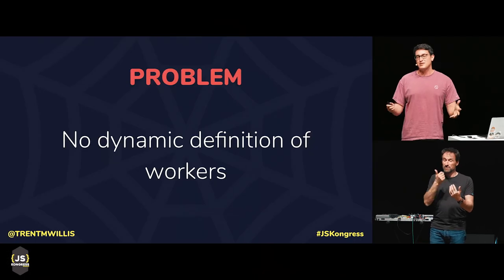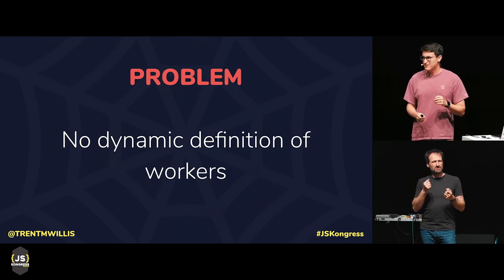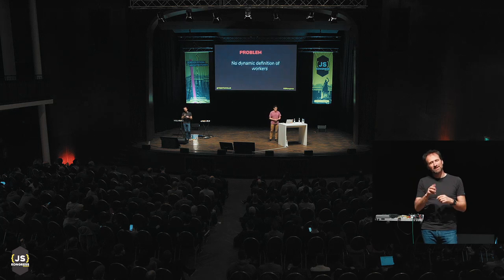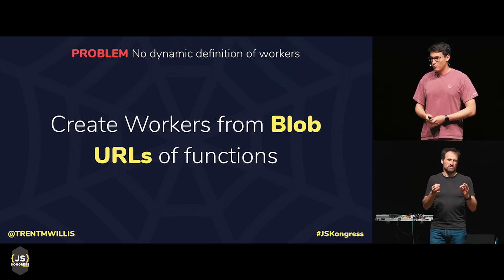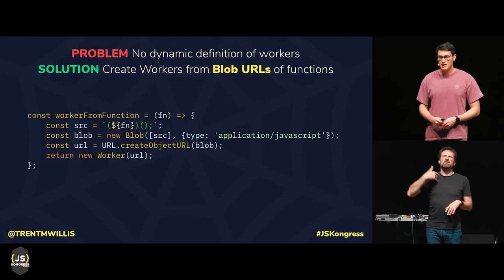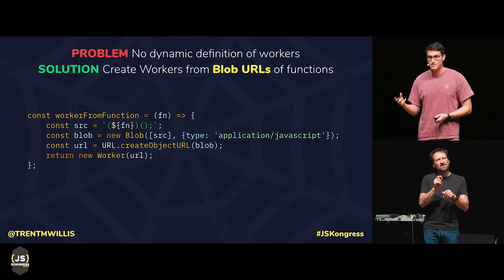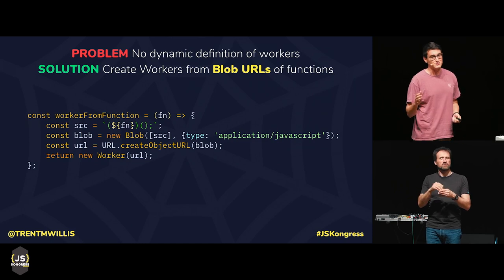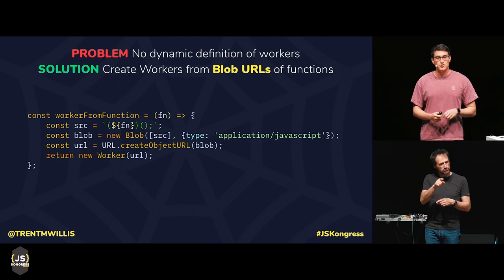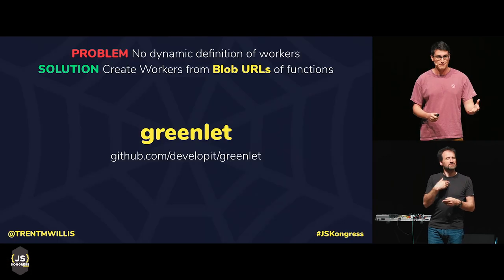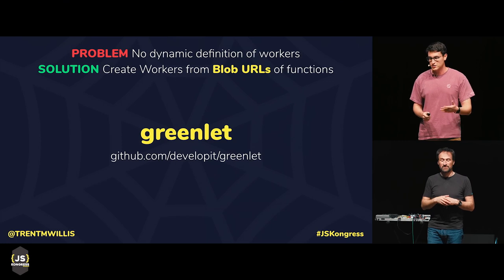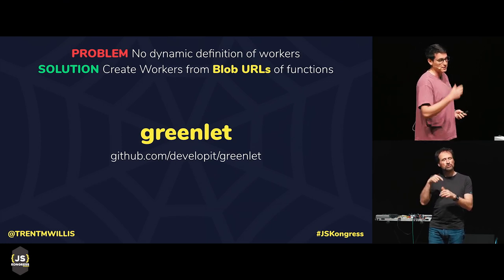For our third problem — how do we dynamically define workers — there's a widely known solution: create a worker from a blob URL of a function. A blob is a file-like object in JavaScript that represents some data. If your string happens to contain JavaScript code, you have a file-like object of JavaScript code, and you can turn that blob into a temporary URL and load it into your worker. Voila — you have dynamic Web Workers. To avoid remembering this whole song and dance, you can use a library called Greenlit, which is a subset of the functionality Workerize provides. You give it a function, and it gives you back a promise-based function to use in return.